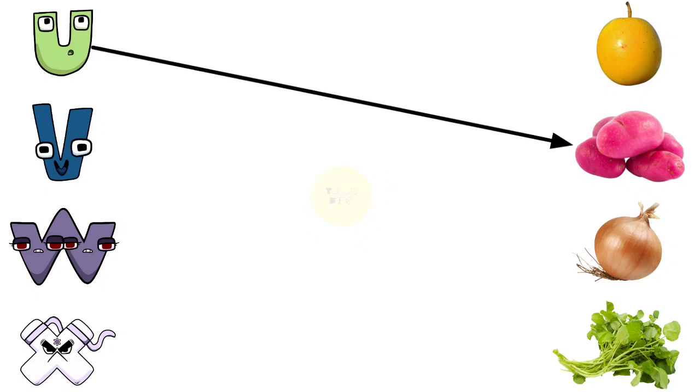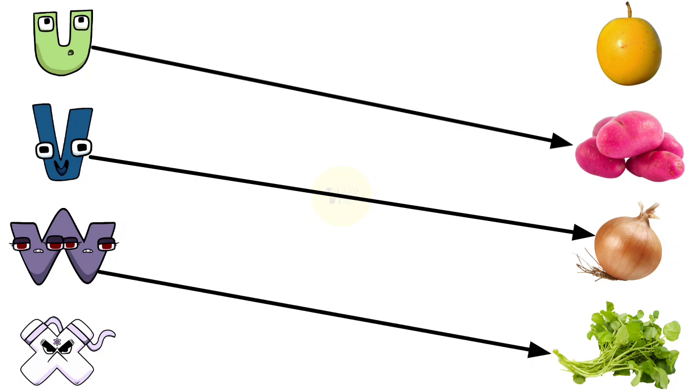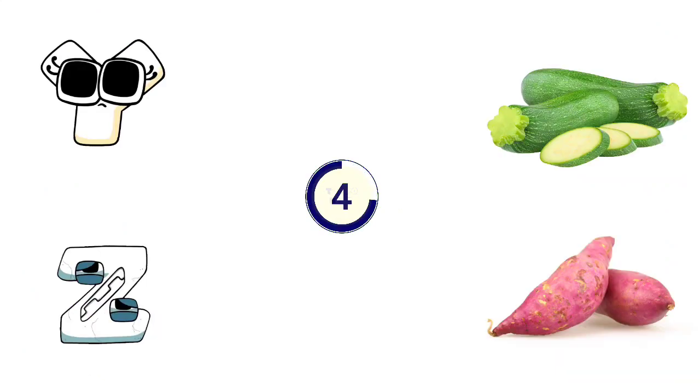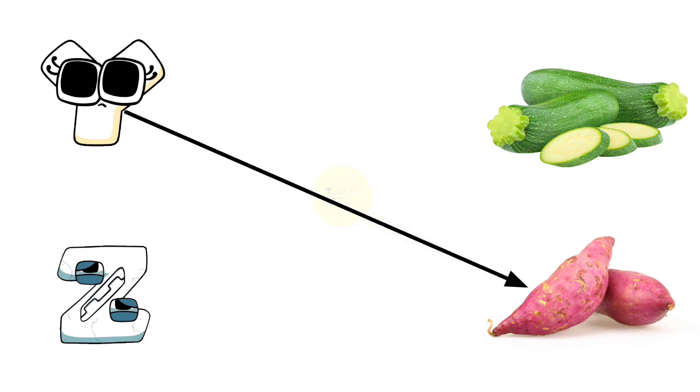U for Udo, V for Vidalia Onion, W for Watercress, X for Ximenia, Y for Yam.